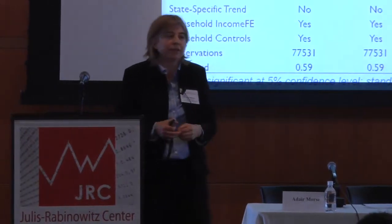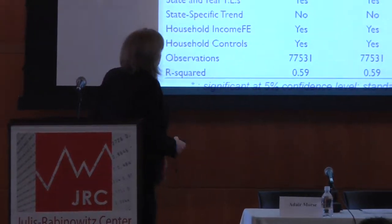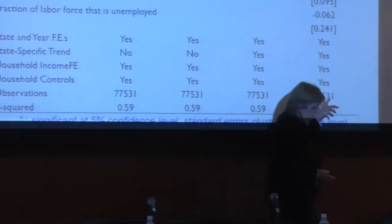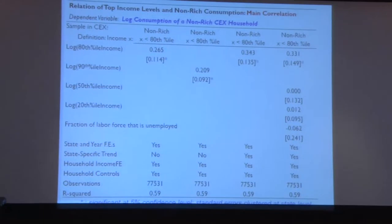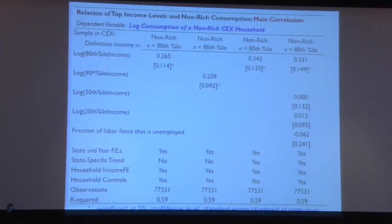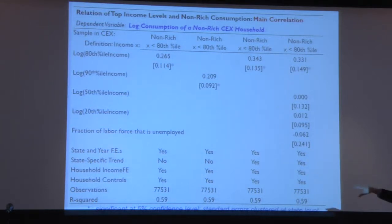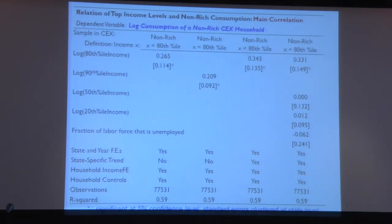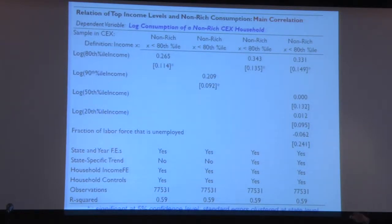Let me show you that estimation — I'll call this a correlation until we go after the stories. Focusing on the final column: the dependent variable is log consumption of a non-rich CEX household. What I'm interested in are the first two variables: log income of the 80th percentile, or log income of the 90th percentile, in that state-year. Absorbing state and year fixed effects and household income in those $2,000 buckets — a fairly stringent estimation. What we find is that there is indeed a positive relationship between the income of the rich and the consumption of the non-rich.